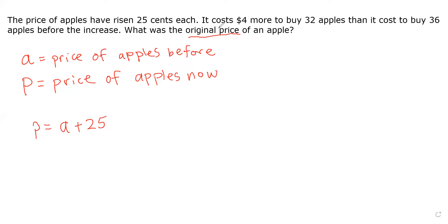Here it says it costs $4 more to buy 32 apples than it costs to buy 36 apples before the increase. Let's find out what the price of 36 apples is. So if one apple back then costed A amount of money, then 36 of them would just be 36A.